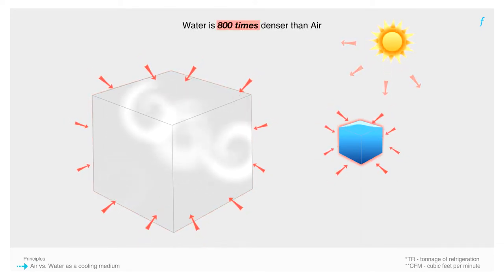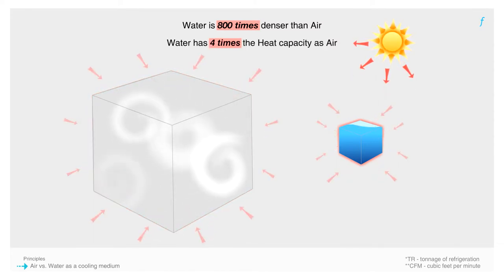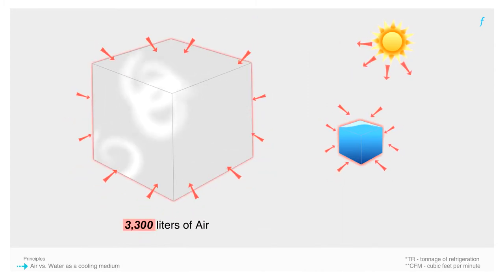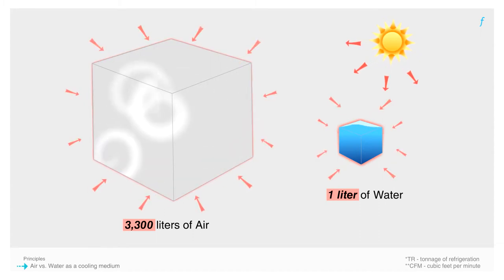Water is approximately 800 times denser than air and has approximately 4 times the heat capacity as air. Effectively, one must circulate 3,300 liters of air as opposed to 1 liter of water to absorb the same amount of heat.